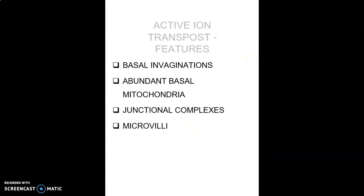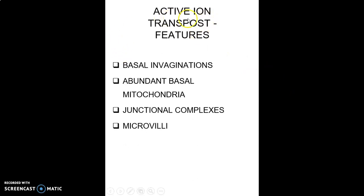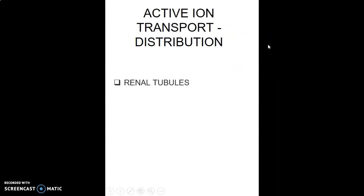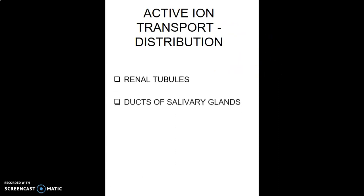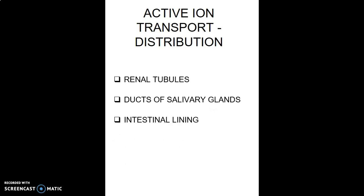Features of an active ion-transporting cell include basal invaginations, abundant basal mitochondria, junctional complexes, and microvilli. These are found in renal tubules, the ducts of salivary glands, and intestinal lining.